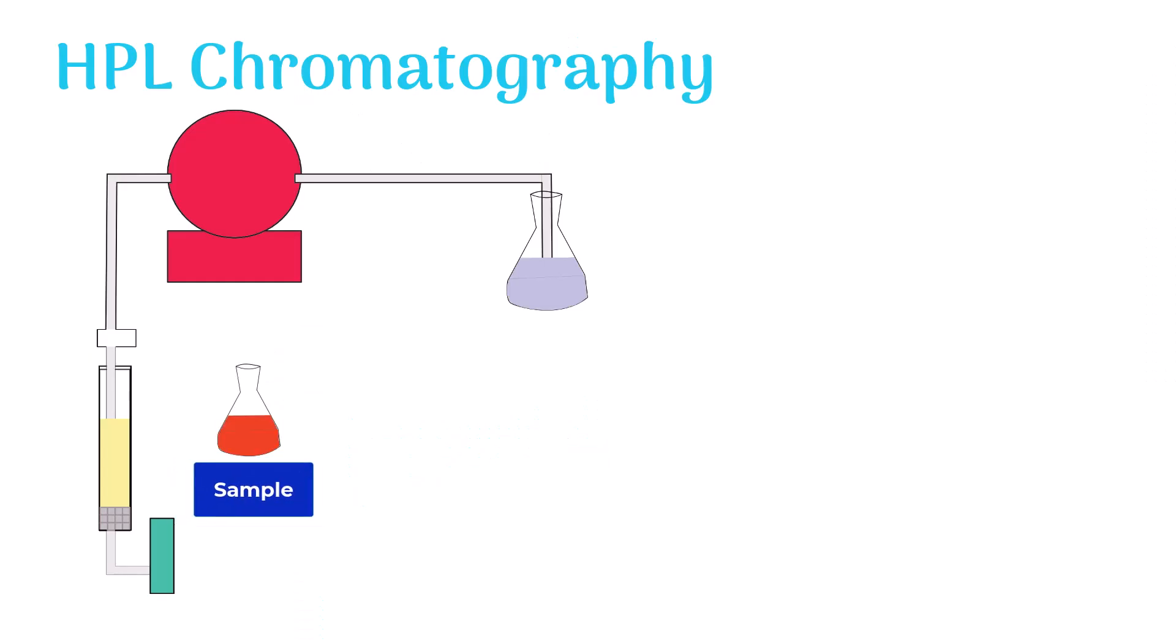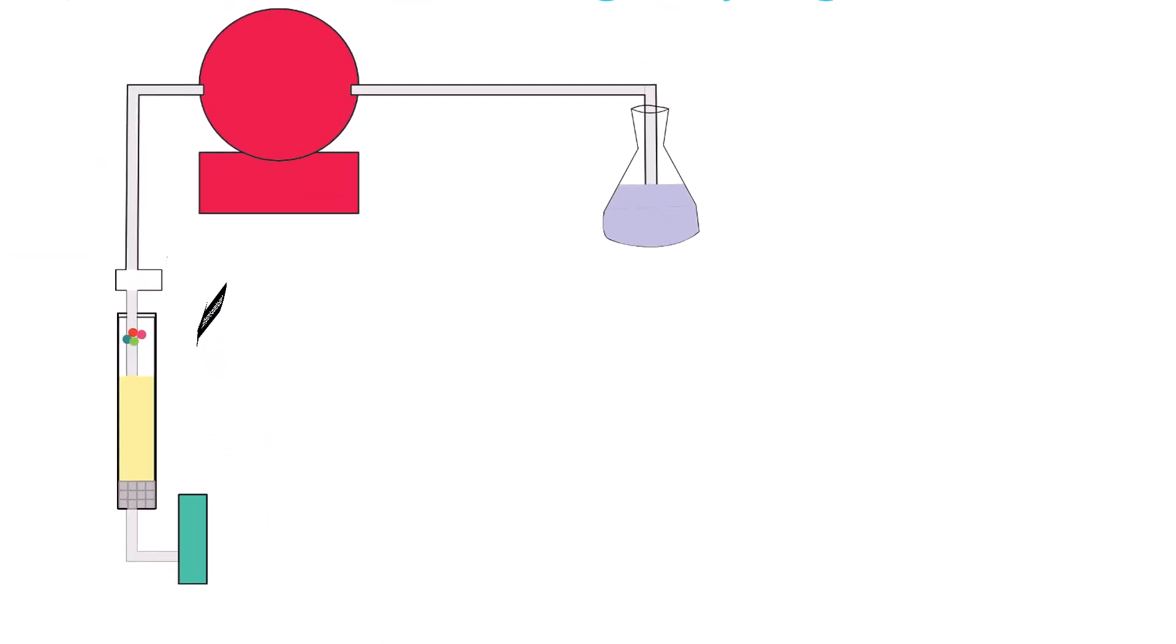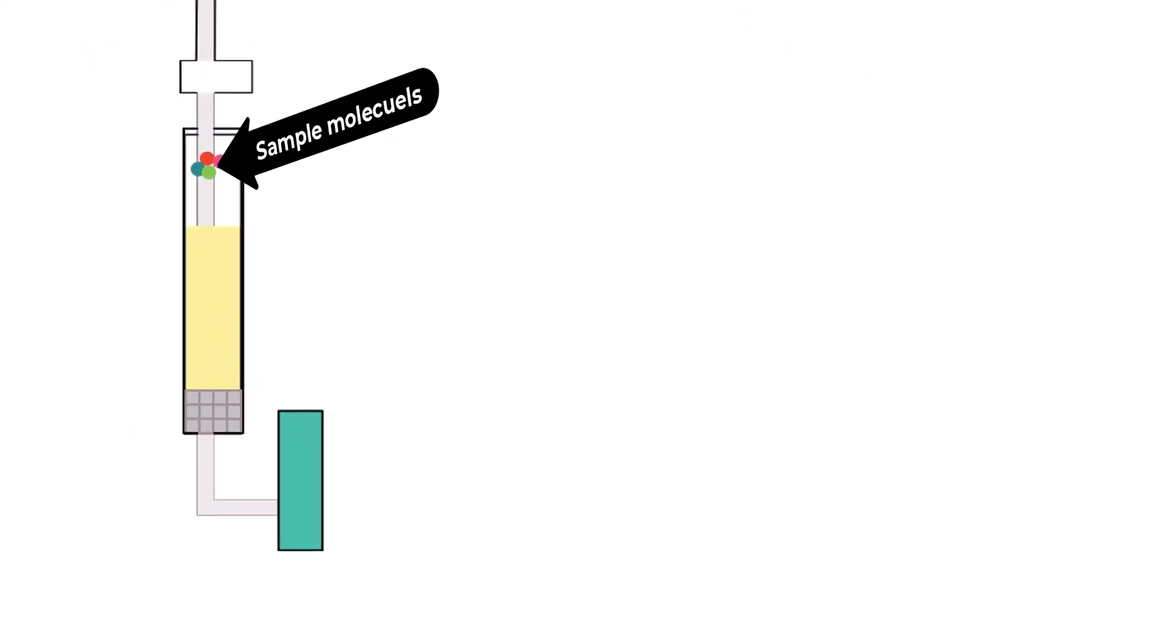The sample is inserted into the column via injector. Inside the column, the sample molecules interact with the stationary phase and get separated.